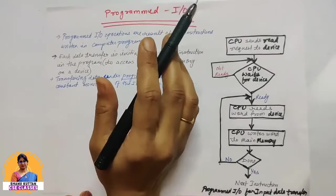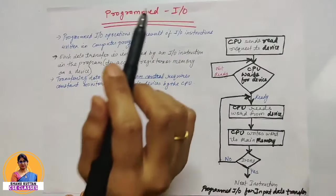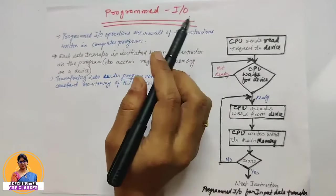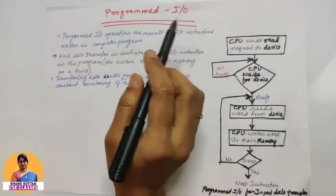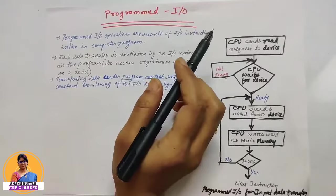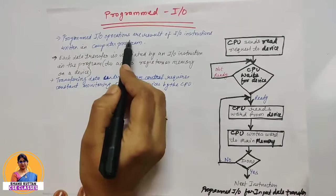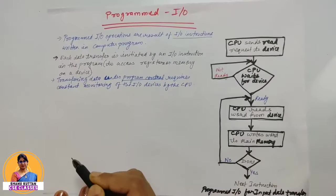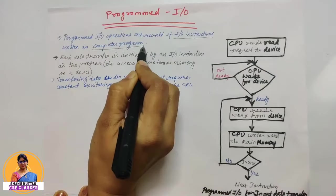Jab CPU aur I/O ke beech mein agar hume transfer karna hai data, in dono ke beech agar programs ke through, instructions ke through kuch agar hum data transfer kar rahe hai, then woh aata hai programmed I/O category mein. So we can say programmed I/O operations are result of I/O instructions written in computer programs.